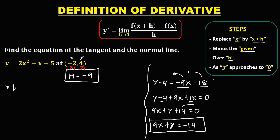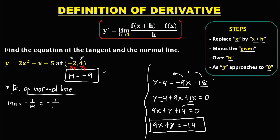Now to find the equation of the normal line, first we need the slope of the normal line. The slope of the normal line equals negative 1 over m. Since m is negative 9, we have negative 1 over negative 9. Negative divided by negative gives positive, so the slope of the normal line is positive 1 over 9.